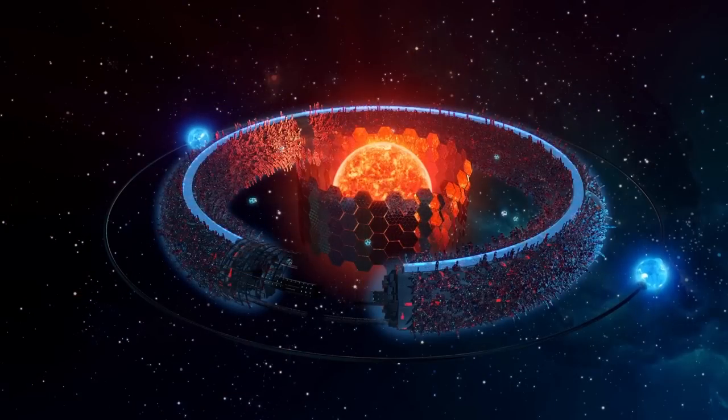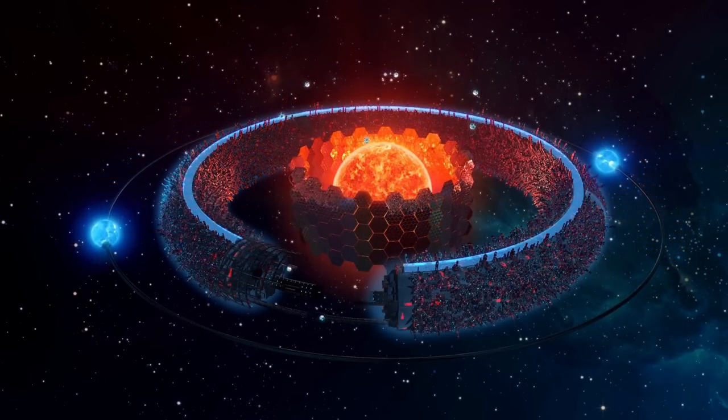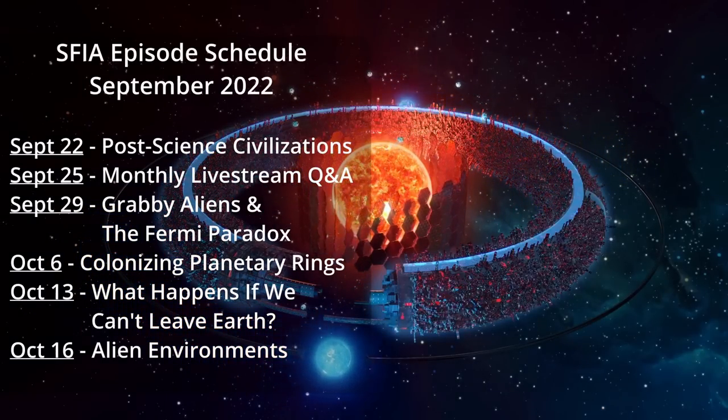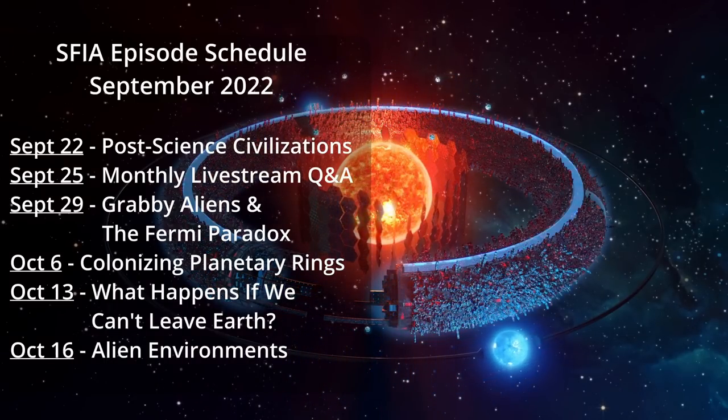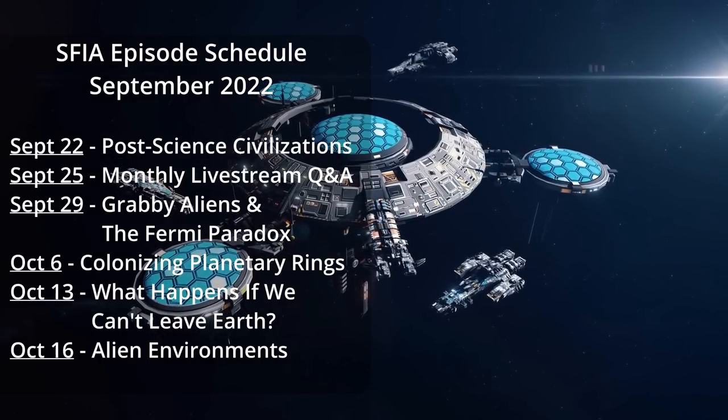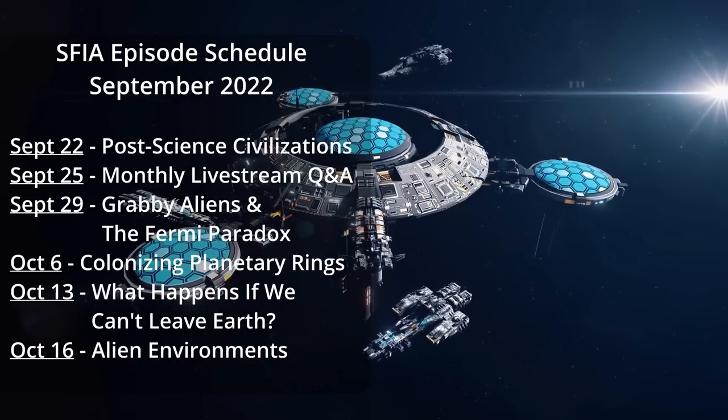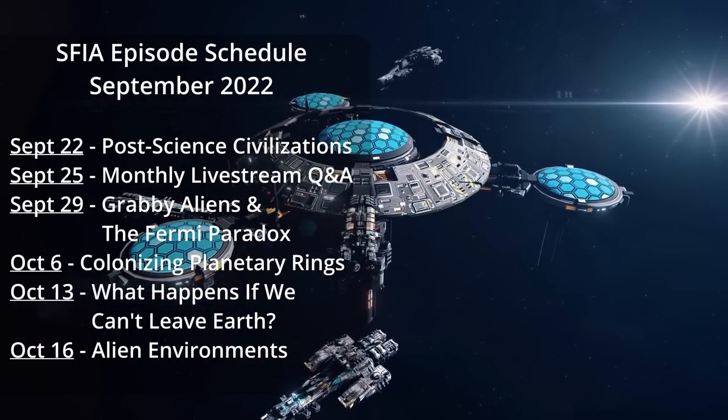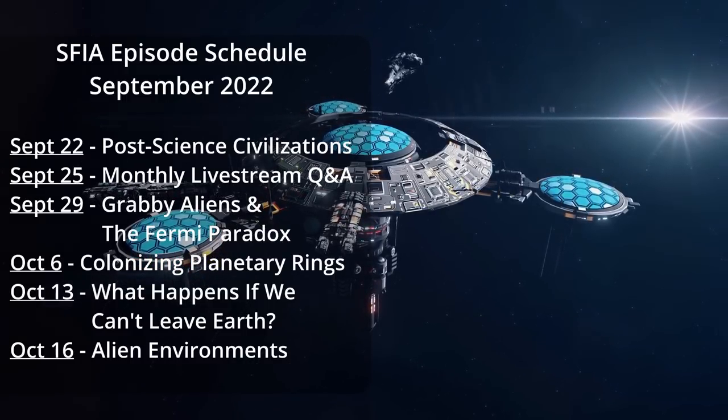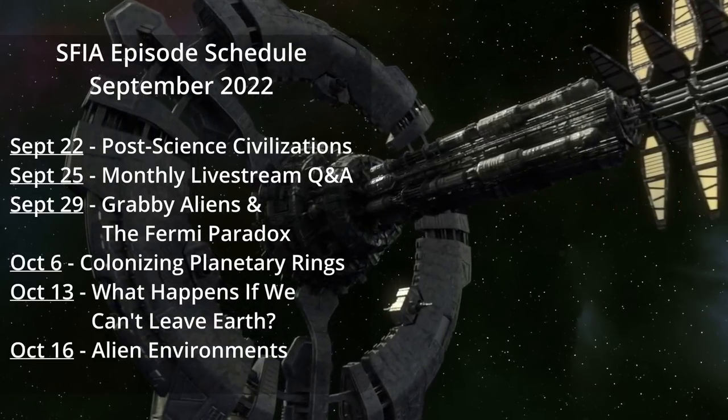So almost every time the Kardashev Scale comes up someone is bound to ask what qualifies as a K4 Civilization, and in between now and when I wrote this episode's script I also did one on the grabby aliens perspective on the Fermi Paradox, and I finally found something that seemed like a good in-between step on the scale between galactic and observable universe, and that's what for the moment I'm going to call a handsome bubble, and a K4 Civ. We'll discuss that more in our grabby aliens episode in two weeks. Before that though, next week we'll be discussing post-science civilizations, both those that might abandon research and those which find they have either hit a wall or learned all the science there is to know. Then we'll have our livestream Q&A on Sunday, September 25th, at 4 pm Eastern Time, and as usual my lovely wife Sarah will co-host that and relay on your questions from the live chat.